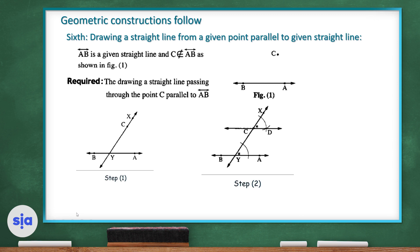Put the pin of the compass at point Y and make an arc; with the same opening, put the pin at point C and make an arc; then put the pin at point X and make another small arc, forming point D. If you connect C and D together, they form line CD which is parallel to AB, completing this construction.